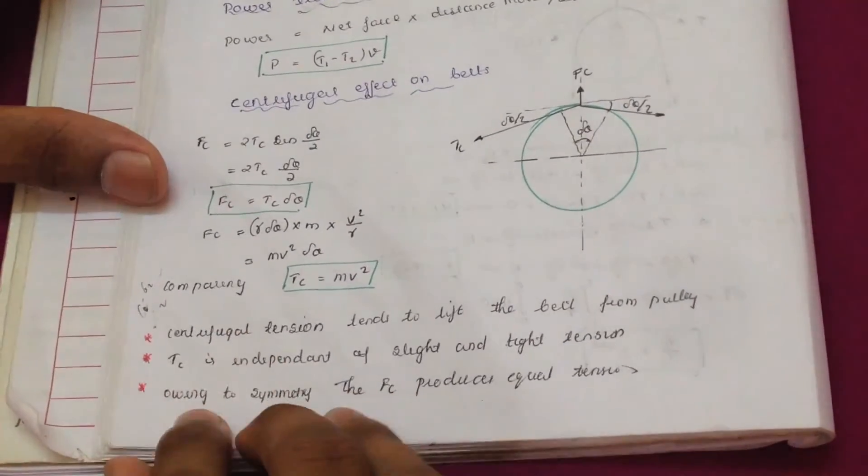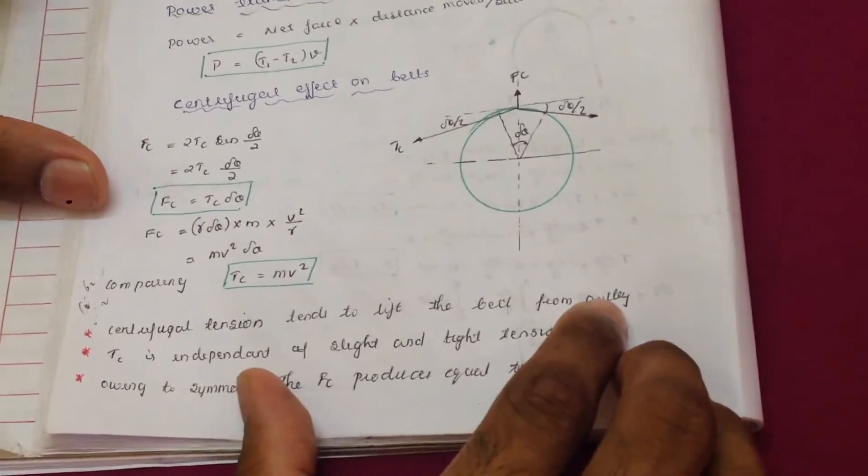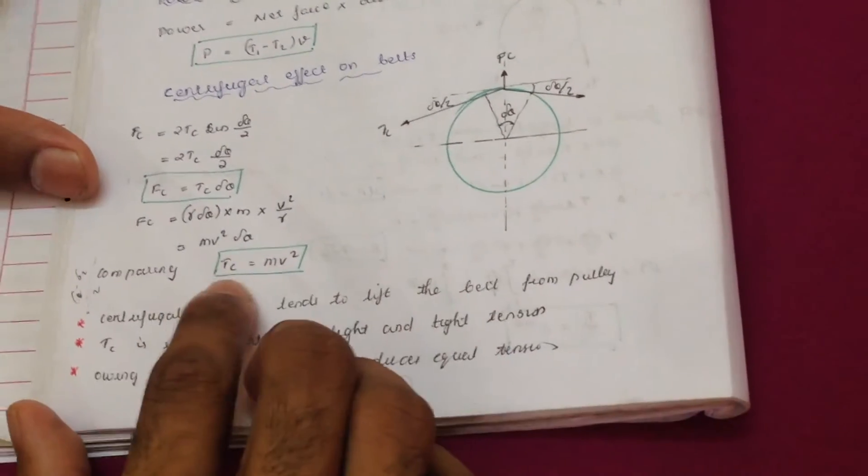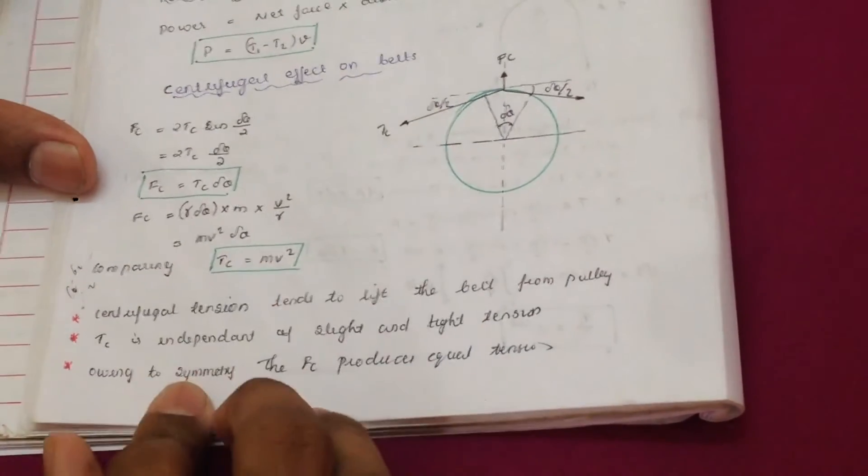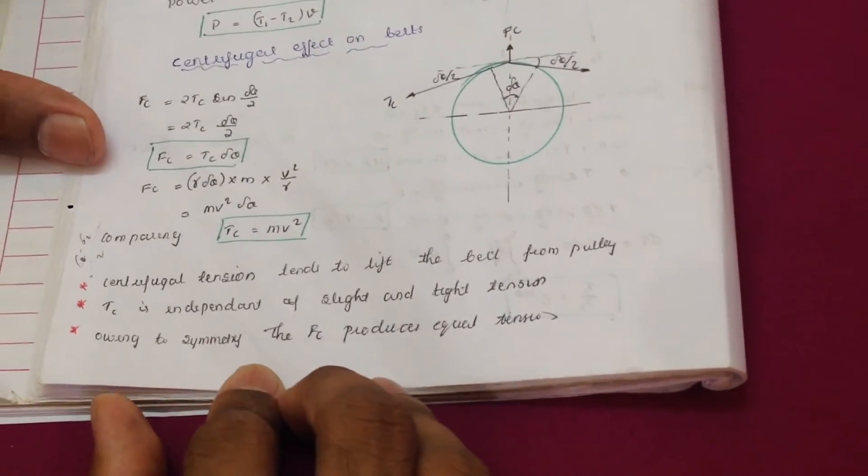There are some common facts that centrifugal tension tends to lift the belt from the pulley and tc is independent of slight and tight tension. You can see from here that no term of t1 and t2 is here. And owing to the symmetry, the fc produces equal tension.